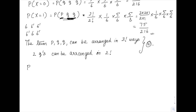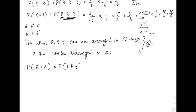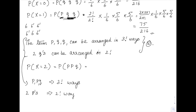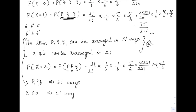The third possibility is P(X = 2), meaning two sixes and one non-six: p, p, q. The same logic applies — p, p, q can be arranged in 3! ways and the two p's in 2! ways, so we write 3!/2! × (1/6) × (1/6) × (5/6). That gives (3 × 2 × 1)/(2 × 1) × (1/6) × (1/6) × (5/6), which equals 15/216.